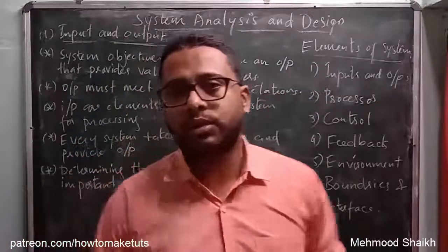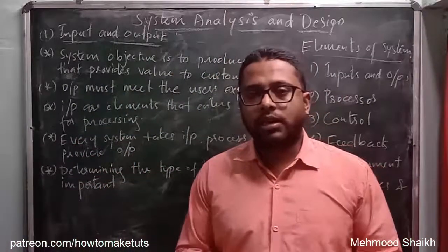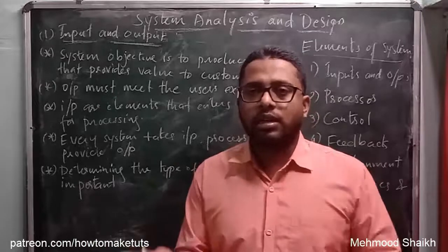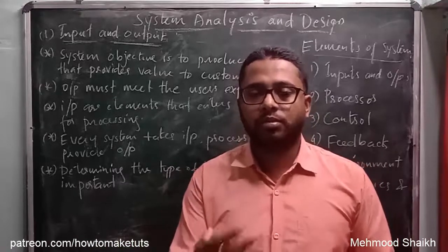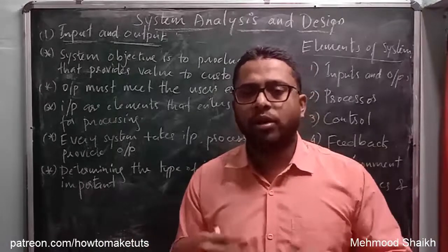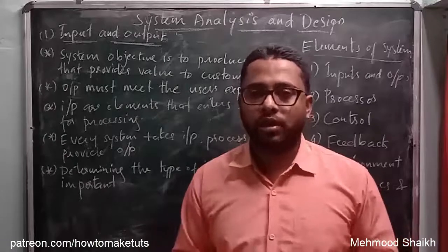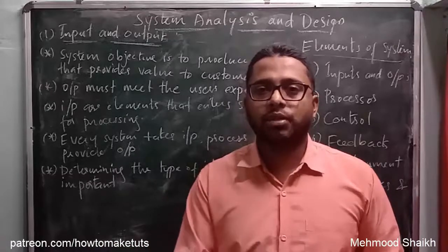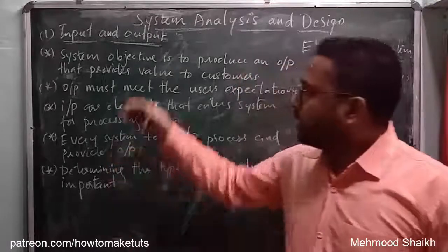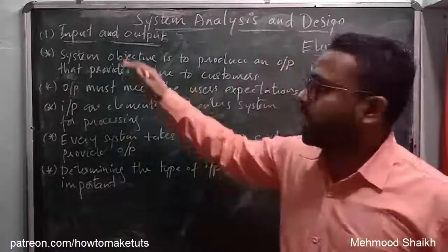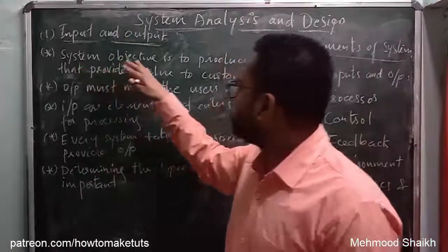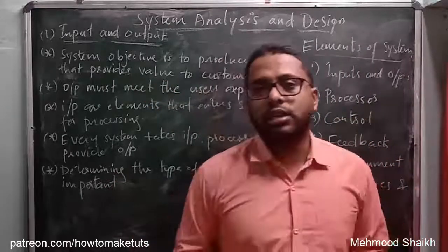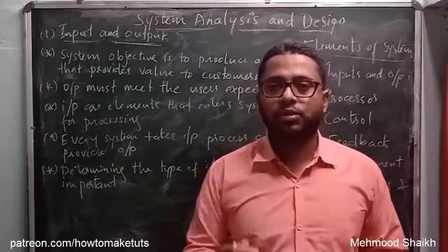Let us start our discussion with the first element, which is inputs and outputs. We have already discussed the definition of a system — a system can be a software application which takes input from the user, processes it, and provides the output. The first point is: a system's objective is to produce an output that provides value to the customers.